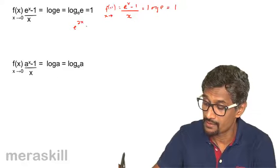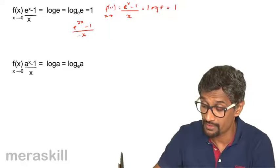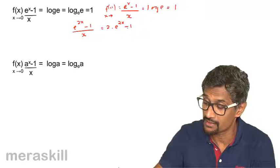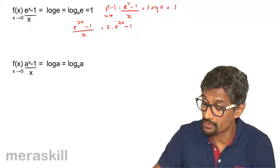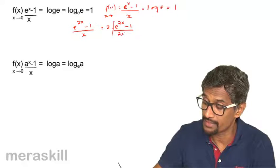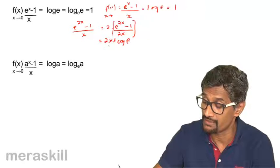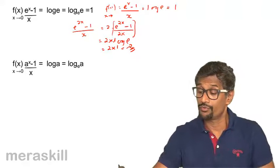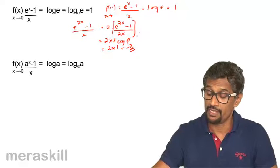For example, suppose you have (e^(2x) - 1) / x. We need to make the denominator also 2x, so we write it as 2 × (e^(2x) - 1) / 2x. This turns out to be 2 × log e to the base e, which is 2 × 1 = 2.